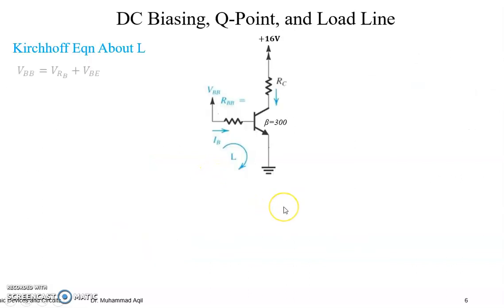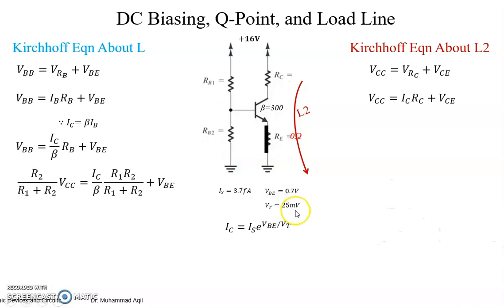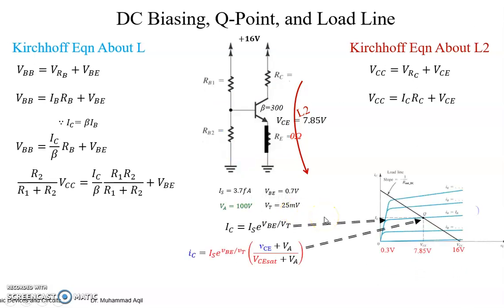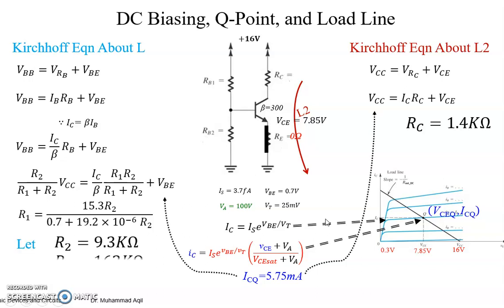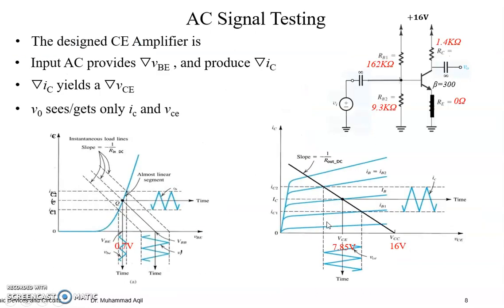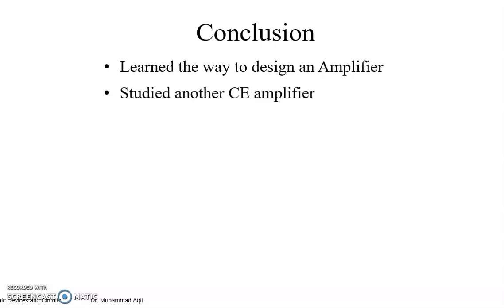So far we have reached up to a point to see what we have learned and what open questions we have that will open our mind for the next or upcoming lectures. We have learned so far the way to design an amplifier. Besides designing an amplifier, we have learned another amplifier - another common emitter amplifier having no emitter resistance. We studied another common emitter amplifier.